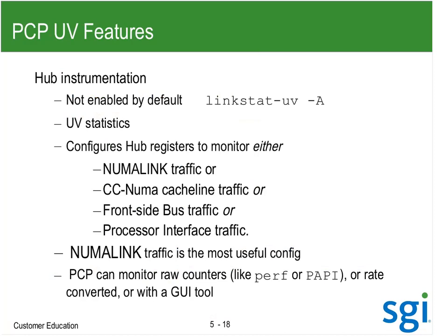There is a PCP SGI RPM adding in a PMDA for the UV. On UV2 there is a patch so that the UV statistics work correctly — they cloned the PMDA from a UV1 but did not assign it a new index number for the group of statistics. I was plotting this, but if it's not on by default, I have to do dash capital-A to get those statistics. I was plotting the Numalink traffic.